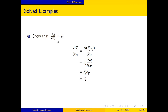Example 7: Show that d(x vector)/d(x_i) equals e_i vector. The vector x equals e_j*x_j. Upon partially differentiating with respect to x_i, we have e_j * d(x_j)/d(x_i) equals e_j * delta_ij. Upon summation over repeated index j, this results in e_i. Thus d(x vector)/d(x_i) equals e_i vector.